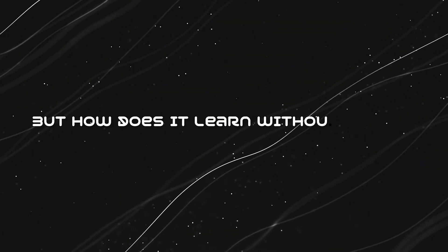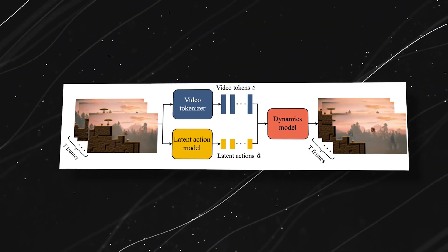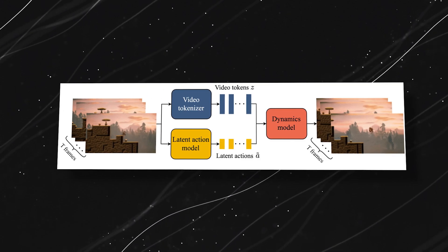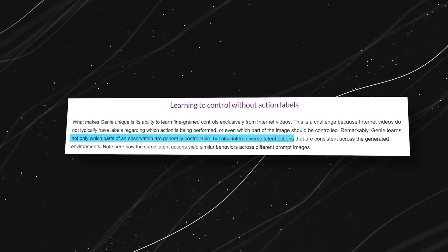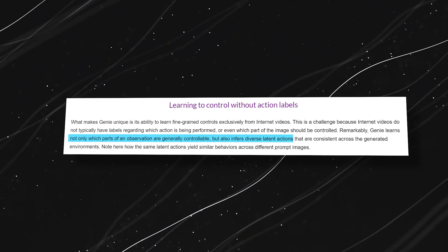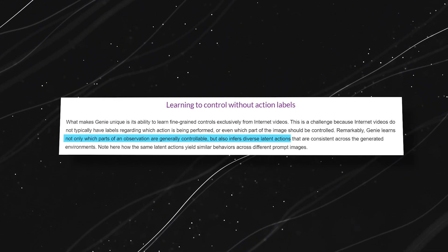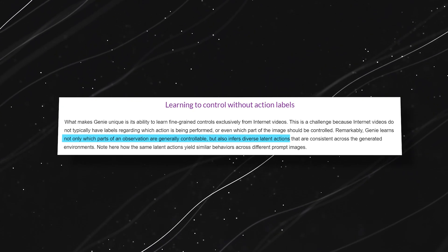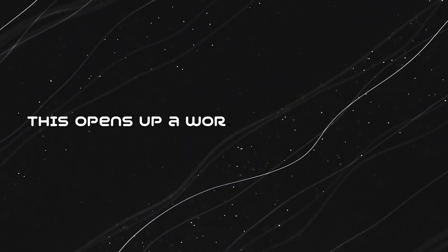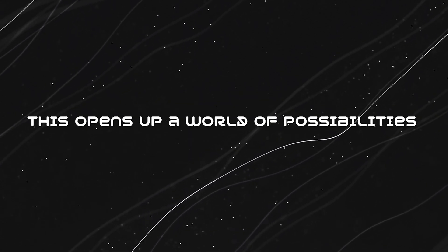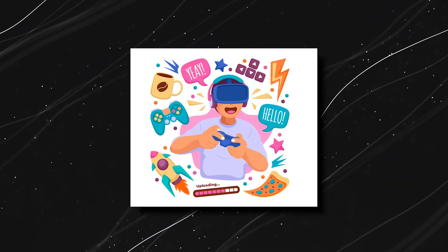But how does it learn without labels? The answer lies in Genie's unique ability to learn controls directly from the videos. It identifies controllable elements like characters and infers diverse actions like jumping and running, all without explicit instructions. This opens up a world of possibilities for creators, educators, and gamers.